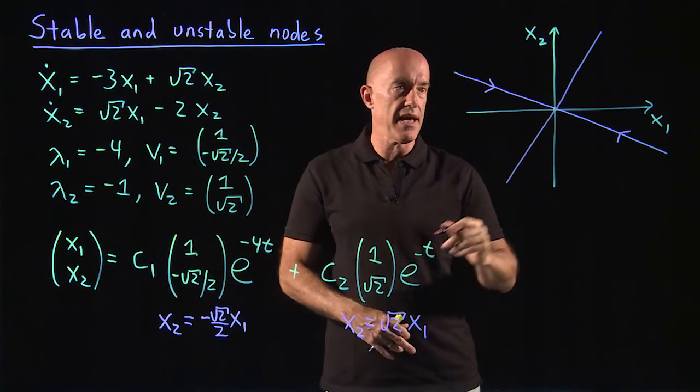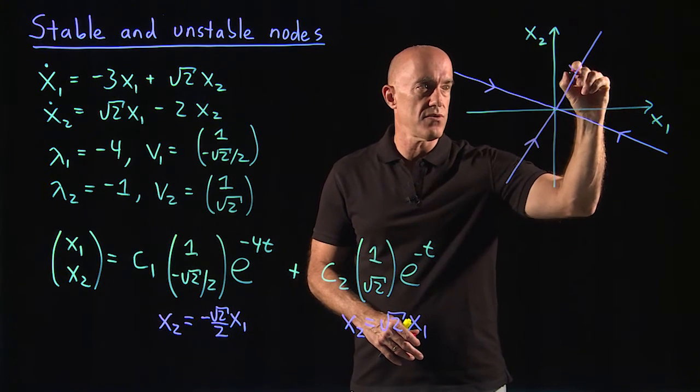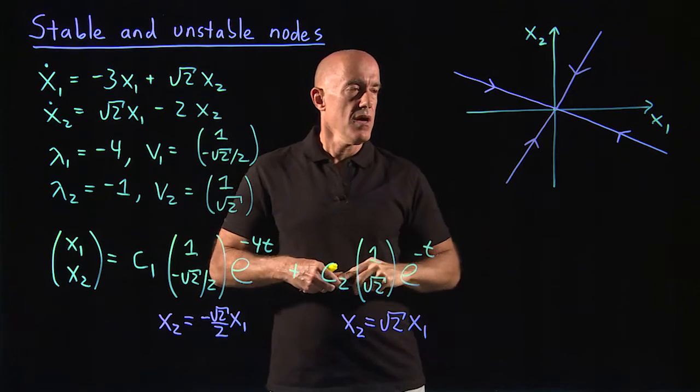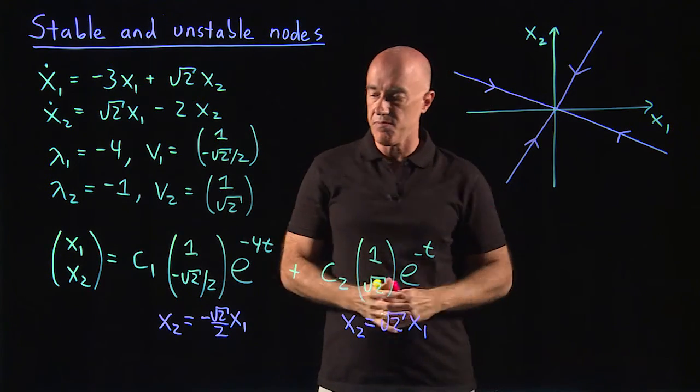And here the solution is decaying like e to the minus t. So also going into the fixed point.